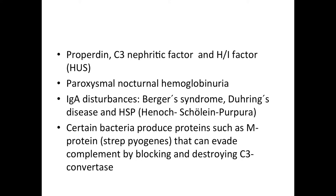Henoch-Schönlein purpura (HSP) is a post-viral infection disease that usually occurs in children. It can cause fever, enlargement of lymph nodes, and polyarthritis. However, it is most significant for its purpura — subcutaneous bleeding usually more than 3 mm in diameter. What differentiates it from other purpural diseases is that it is most commonly found in the gluteal region. If you see a lot of purpura in a child in the gluteal region, HSP should be one of your differential diagnoses.